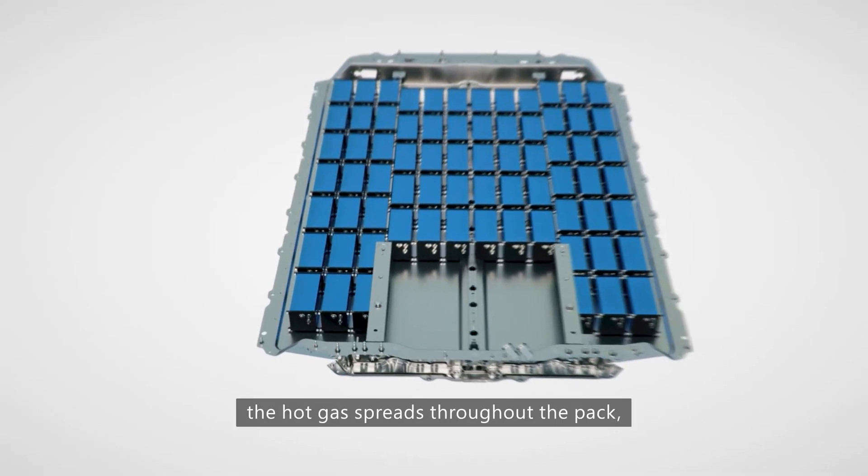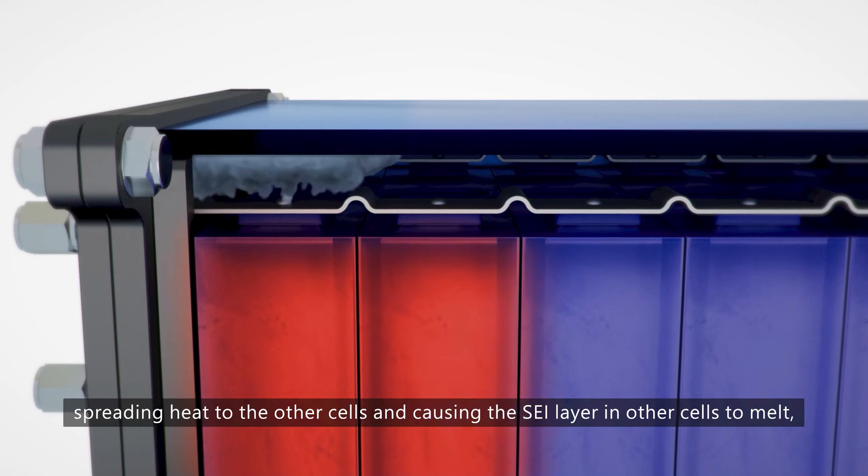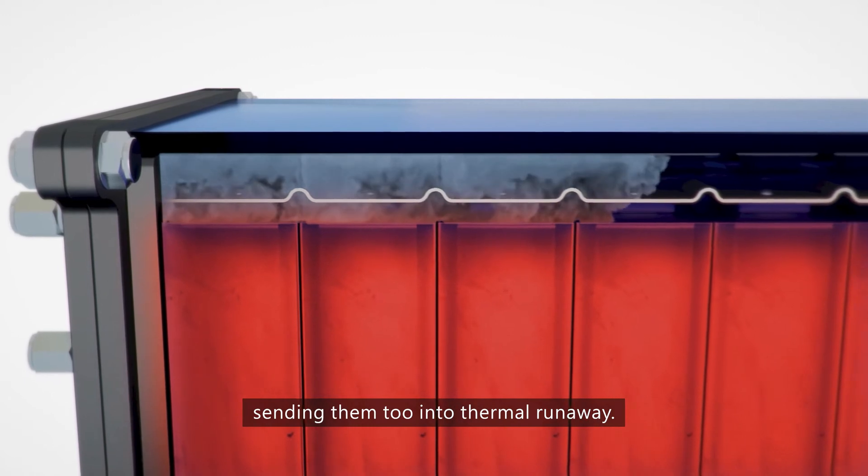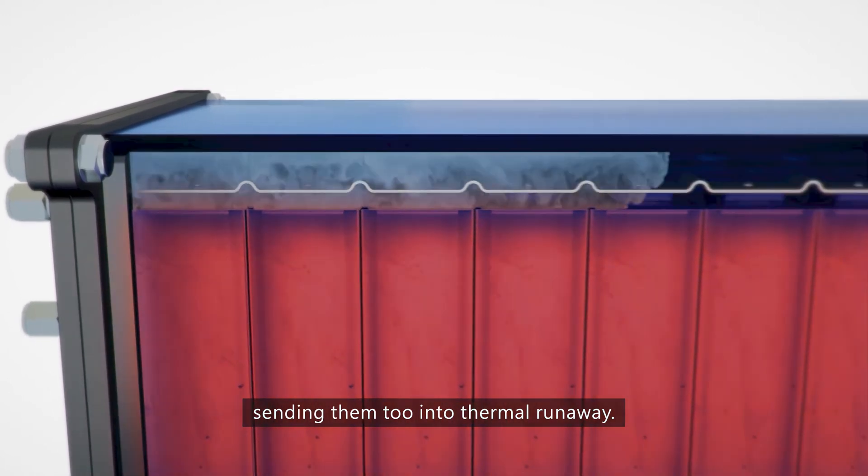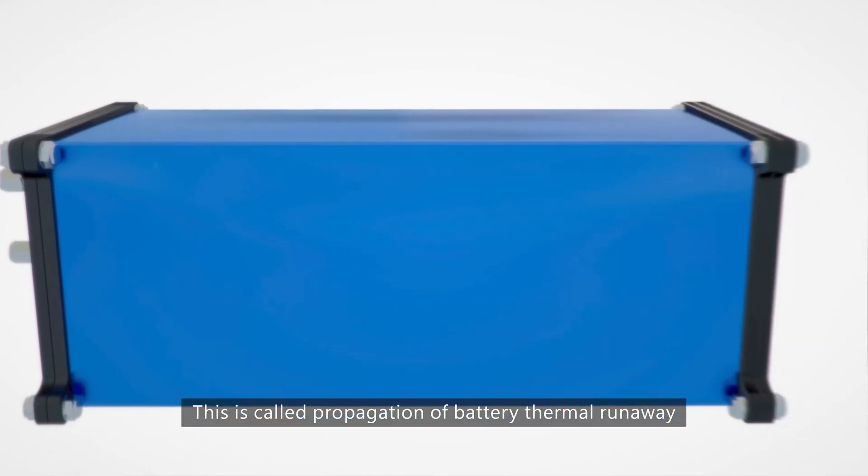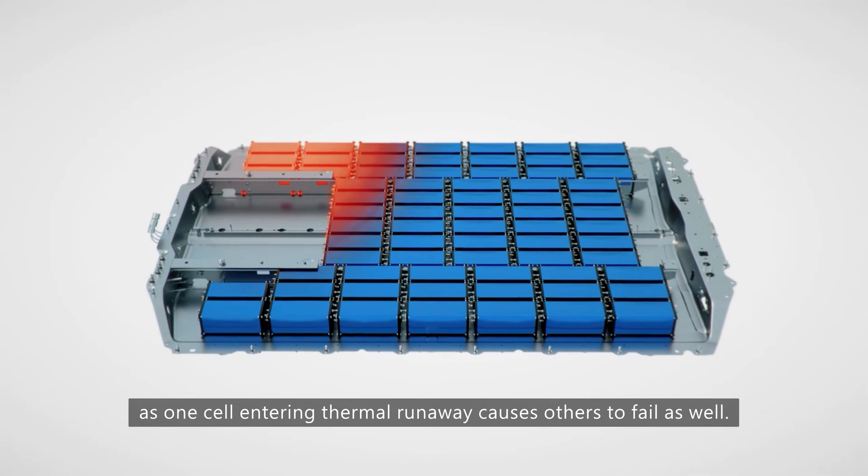At a module level, the hot gas spreads throughout the pack, spreading heat to the other cells and causing the SEI layer in other cells to melt, sending them too into thermal runaway. This is called propagation of battery thermal runaway, as one cell entering thermal runaway causes others to fail as well.